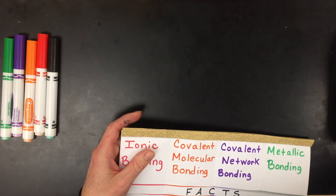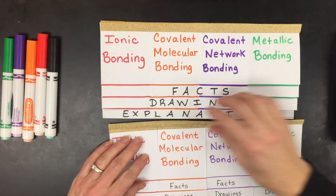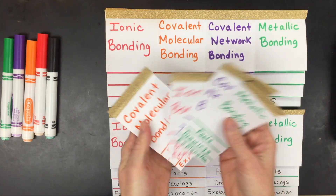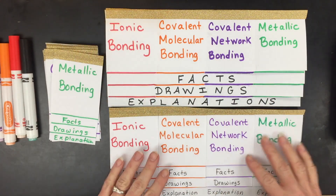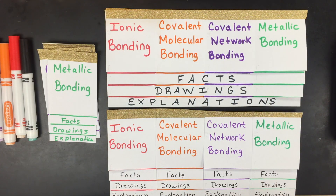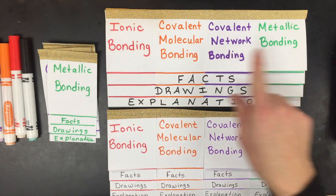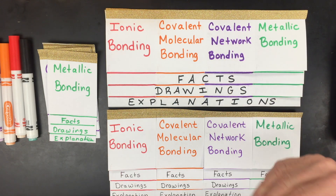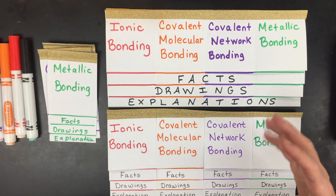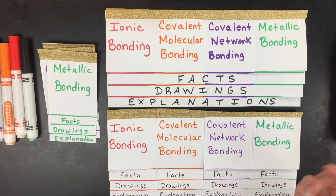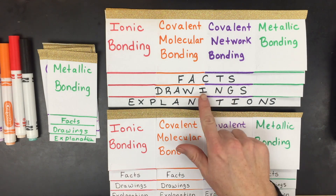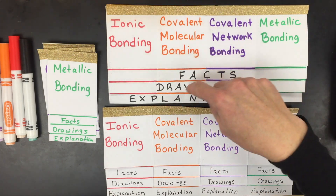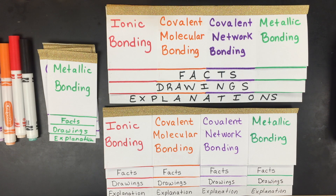The completed foldable can come in three different types — two are shown here, and the last results in mini foldables. All three include the four types of chemical bonds: ionic covalent molecular, covalent networking, and metallic. They'll also include the facts — whether substances dissolve in water, have high melting or boiling points, etc. — and particulate drawings showing why they behave that way.